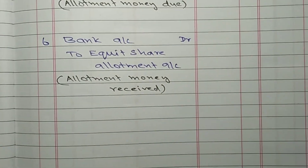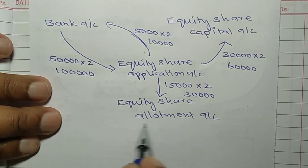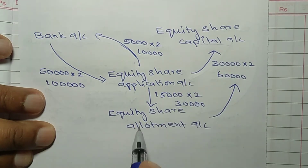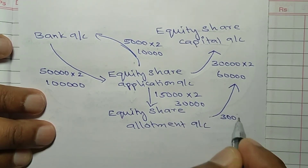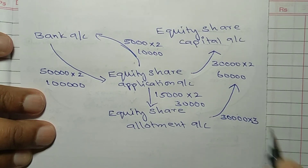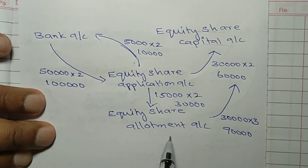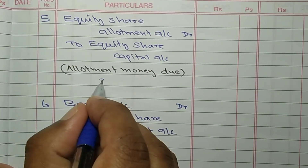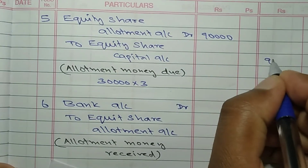Next, entry for allotment: allotment money due. Equity share allotment account debit to equity share capital account. 30,000 shares into Rs 3 allotment money each equals Rs 90,000. Equity share allotment account debit Rs 90,000 to equity share capital account credit Rs 90,000.